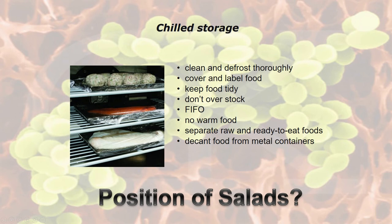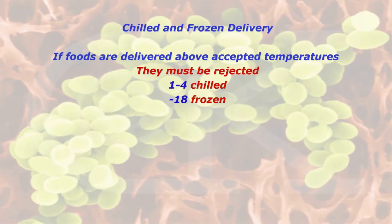A question that may come up: where would you put salads, raw meat, and cooked meat or sandwiches in a fridge? The answer is: always put raw meat and raw products at the bottom of the fridge; put salad items in the middle above the raw meat; and put high-risk foods such as sandwiches and cooked meats on the top shelf. That is the correct positioning for chilled and frozen storage.